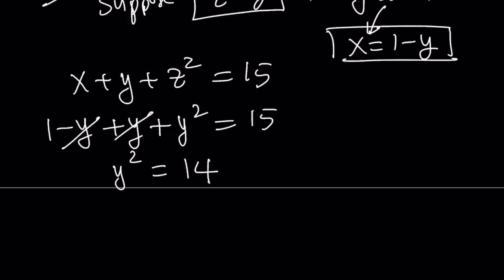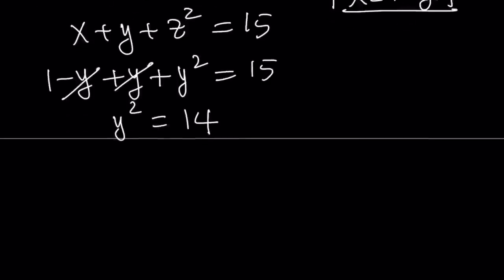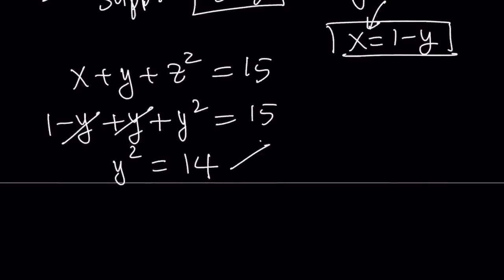Now, why am I taking z equals y, not x equals z? It doesn't matter which variables you handle. At the end, it's just going to turn out to be the same thing. And I'll talk about the different permutations that can happen. So, if y squared is equal to 14, this means y is either square root of 14, or y is equal to negative square root of 14. We don't have any conditions or requirements on y, z, x being positive. They can be any real number. So, both solutions are fine.